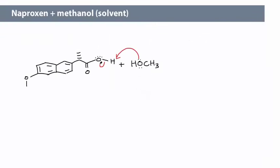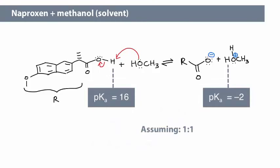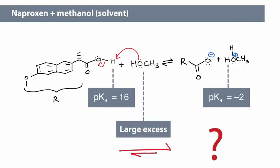What about an analogous reaction between naproxen and methanol? Does the reaction favor the starting materials, products, or is there a 50-50 mixture? Assuming a 1 to 1 ratio of naproxen and methanol, this reaction favors the starting materials. However, there is a large excess of methanol. Is that excess sufficient to drive the equilibrium to products?